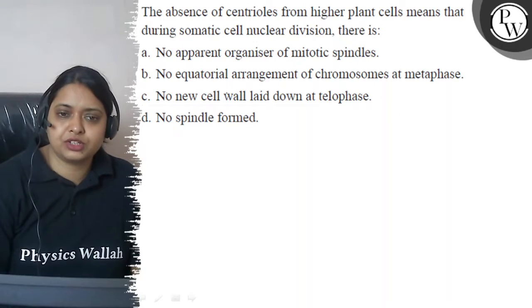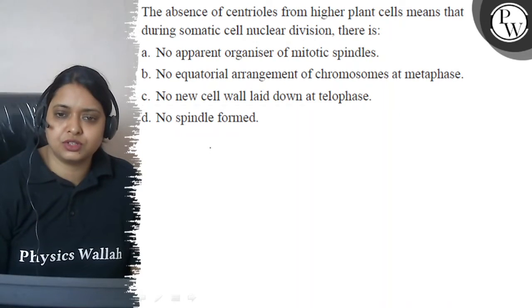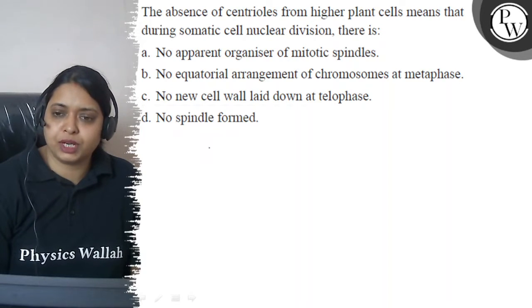Hello, let's see this question. The question is the absence of centrioles from higher plant cells means that during somatic cell nuclear division there is. The options are: a. No apparent organizer of mitotic spindles, b. No equatorial arrangement of chromosomes at metaphase, c. No new cell wall laid down at telophase, and d. No spindle formed.